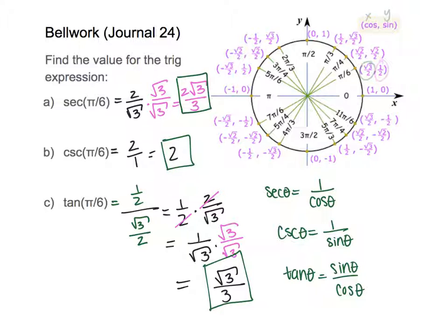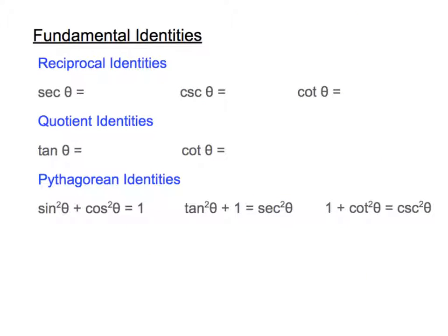I want to look at these identities — these are what we call the reciprocal identities, and I'm going to teach you some more identities to go along. We looked at the reciprocal identities for secant and cosecant, and we'll also do it for cotangent. Secant is 1 over cosine. Cosecant is 1 over sine. And cotangent is going to be 1 over tangent theta. There are also identities called the quotient identities: tangent is sine over cosine.